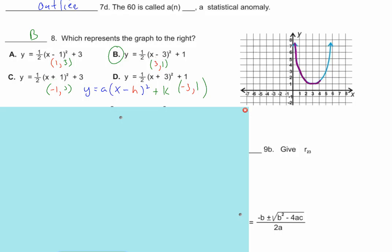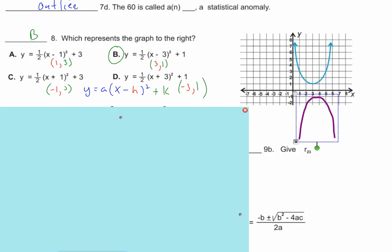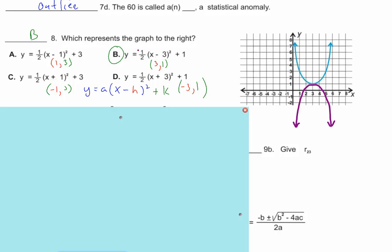What can I do to the equation of B to make the parabola open downward? Make the A value negative. If the A value is negative, it opens down. If the A value is positive, it opens up.